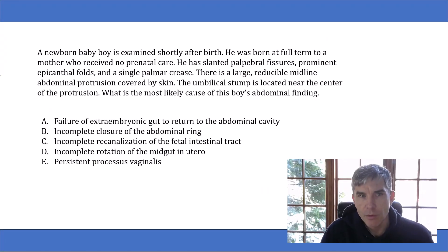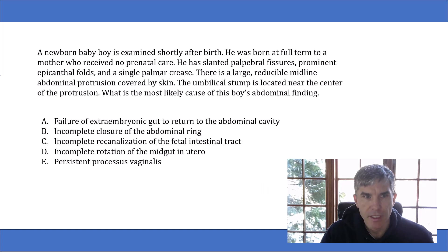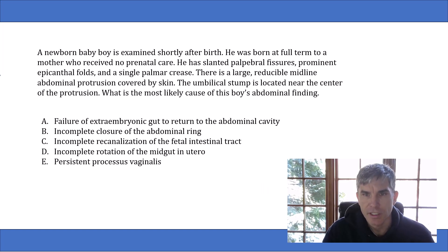Here's the question. A newborn baby is examined shortly after birth. He was born at full term to a mother who received no prenatal care. He has slanted palpebral fissures, prominent epicanthal folds, and a single palmar crease. There is a large reducible midline abdominal protrusion covered by skin. The umbilical stump is located near the center of the protrusion. What is the most likely cause of this boy's abdominal finding?